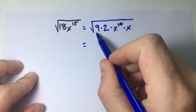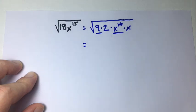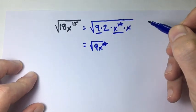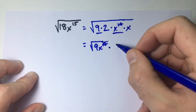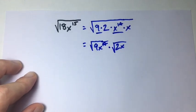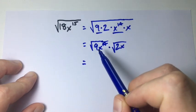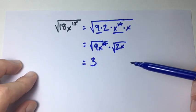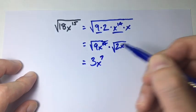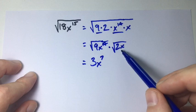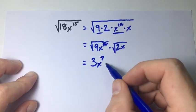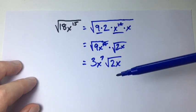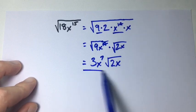Now let's take our two perfect squares, 9 and x to the 14, and put them together: square root of 9x to the 14, times the square root of 2x. The square root of 9 equals 3, and the square root of x to the 14 is x to the power of 7. We can't simplify the square root of 2x further, so the final answer is 3x to the power of 7 times the square root of 2x.